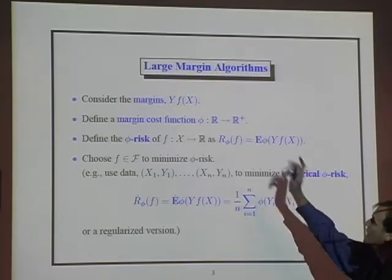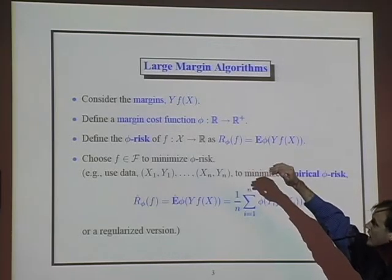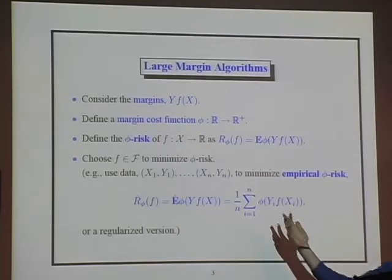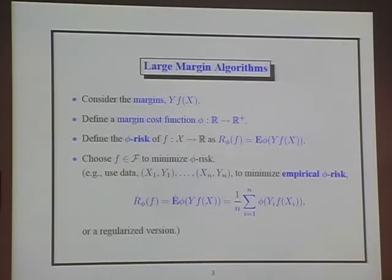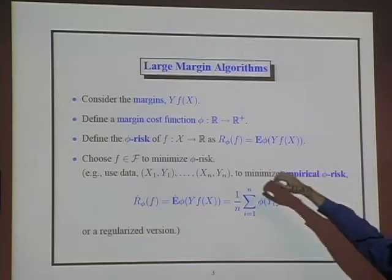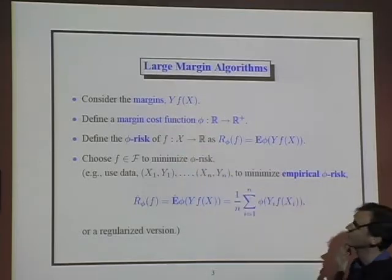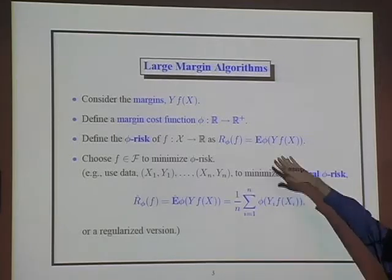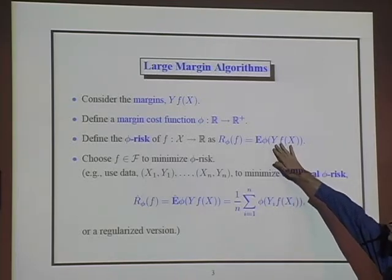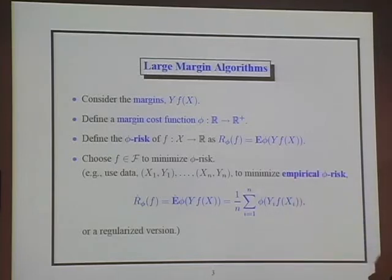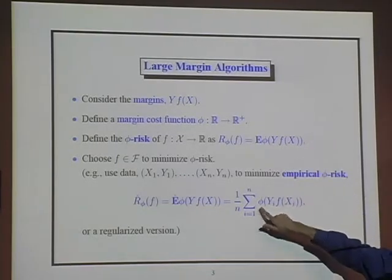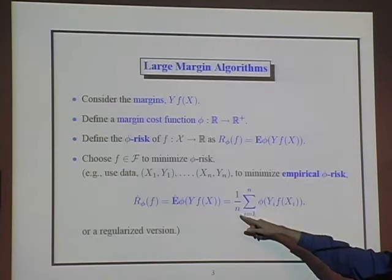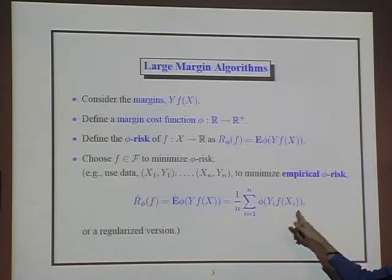We're interested in the probability of misclassification and we're using this real-valued function F. So Y times F of X is a variable that we'd like to be positive — if it's positive, we're making the right prediction. We define some cost function of these margins, these variables Y times F of X, which should be small when its argument is nicely positive and should penalize negative values. The phi risk is the expectation of this cost function evaluated at the margin Y times F of X. We're choosing a function from some class to minimize the empirical phi risk — the average over the data of this cost function of the margin — or maybe a regularized version.